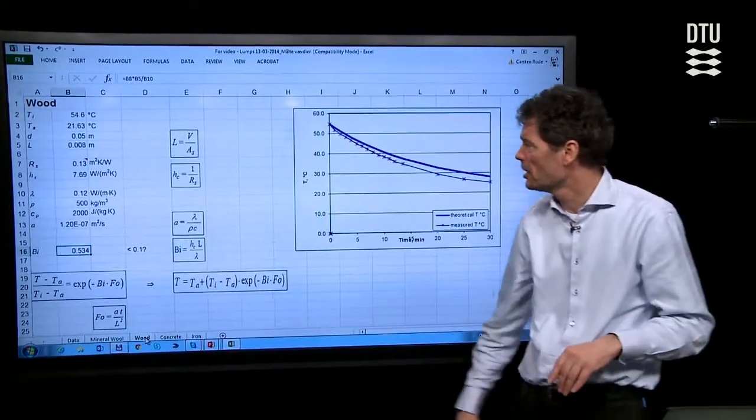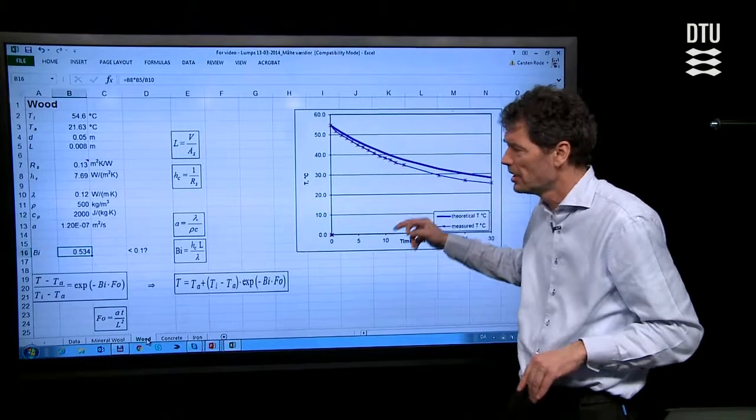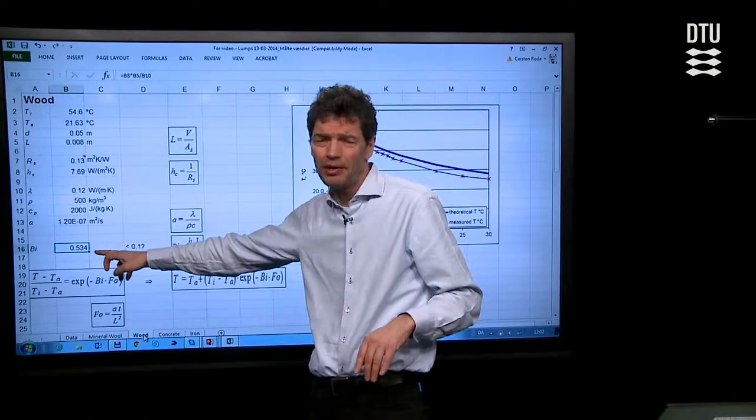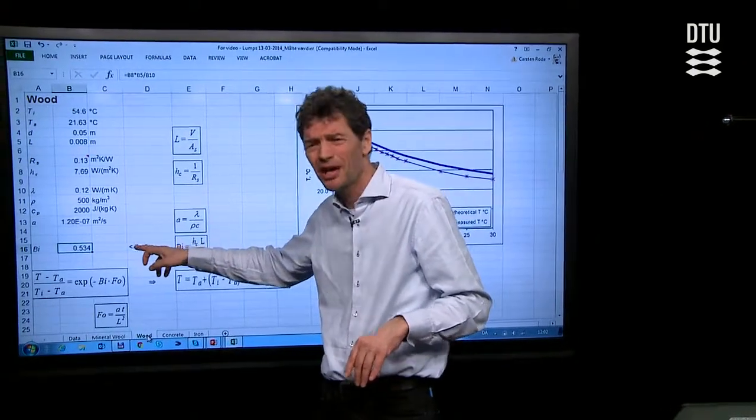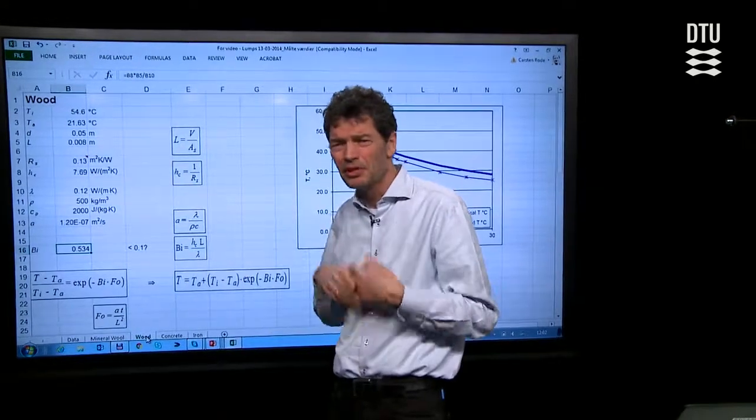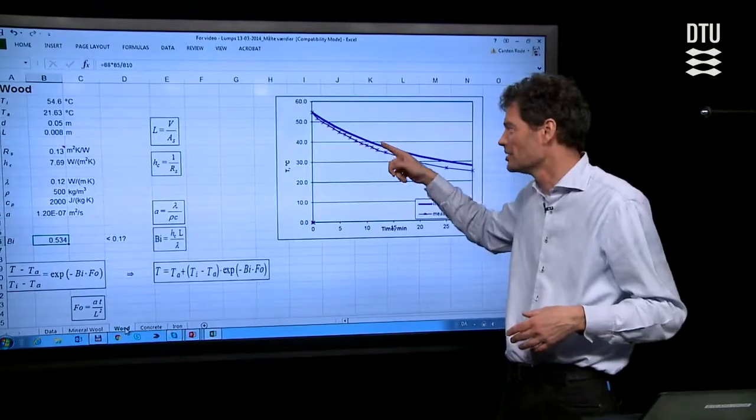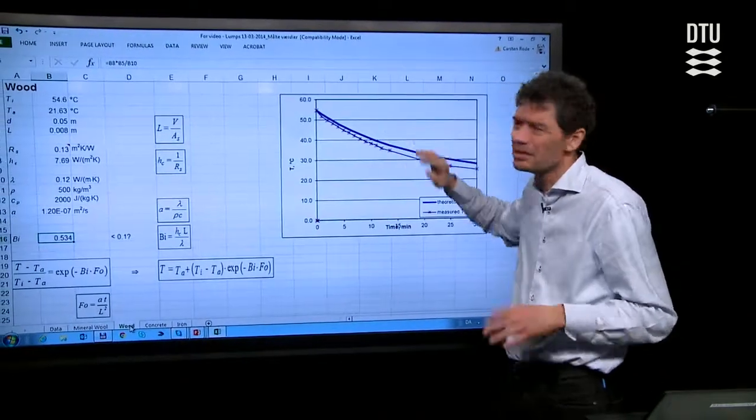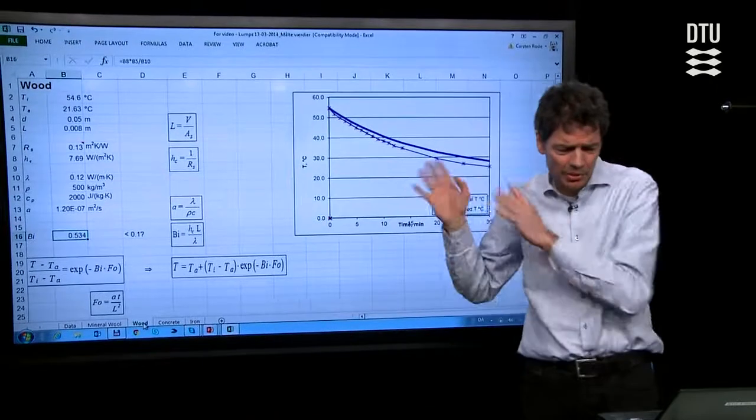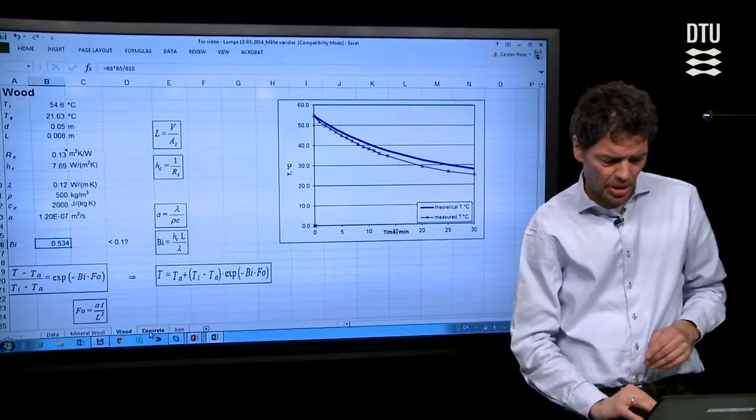If we go to the next material, the wood, it seems to correspond much better. The Biot number is 0.5, still too large a value to expect the lumped analysis theory to hold, but it's better. And even it has turned, in this case, that the analytical solution looks to be the highest values. I'll let it wait while I continue to talk about the concrete.